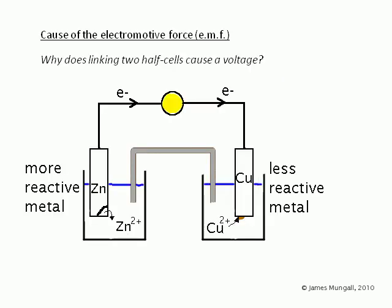Looking at the cause of the electromotive force, why does linking two half cells cause a voltage? A more reactive metal, such as zinc, will have a greater tendency to lose electrons than a less reactive metal, such as copper.